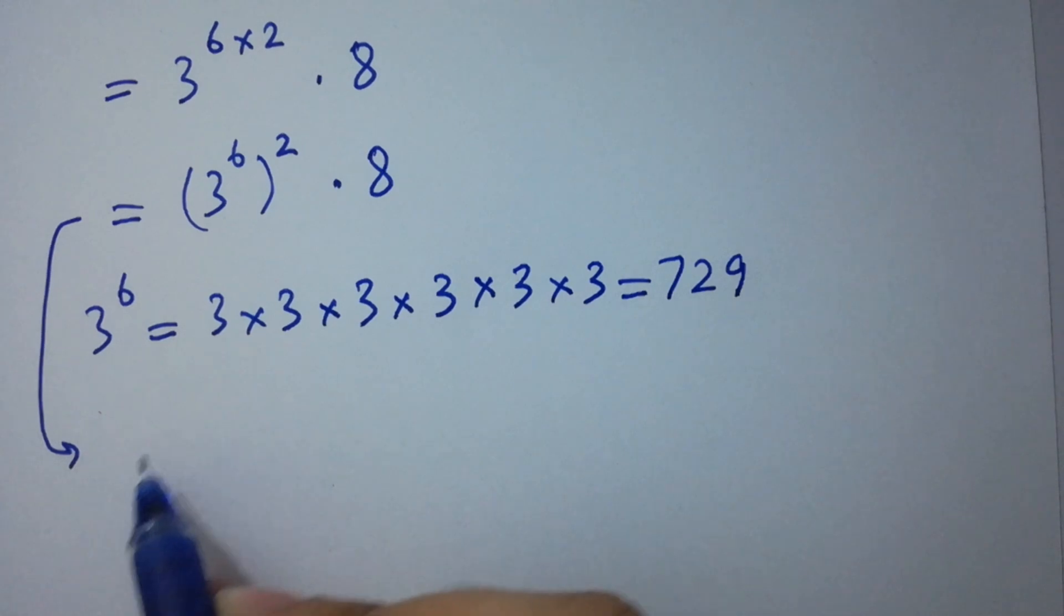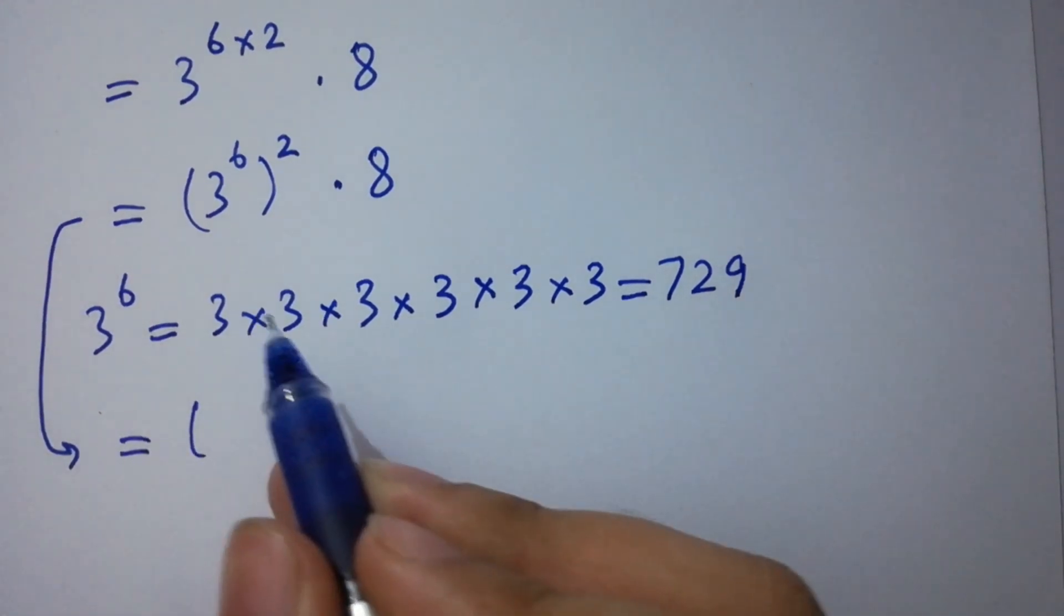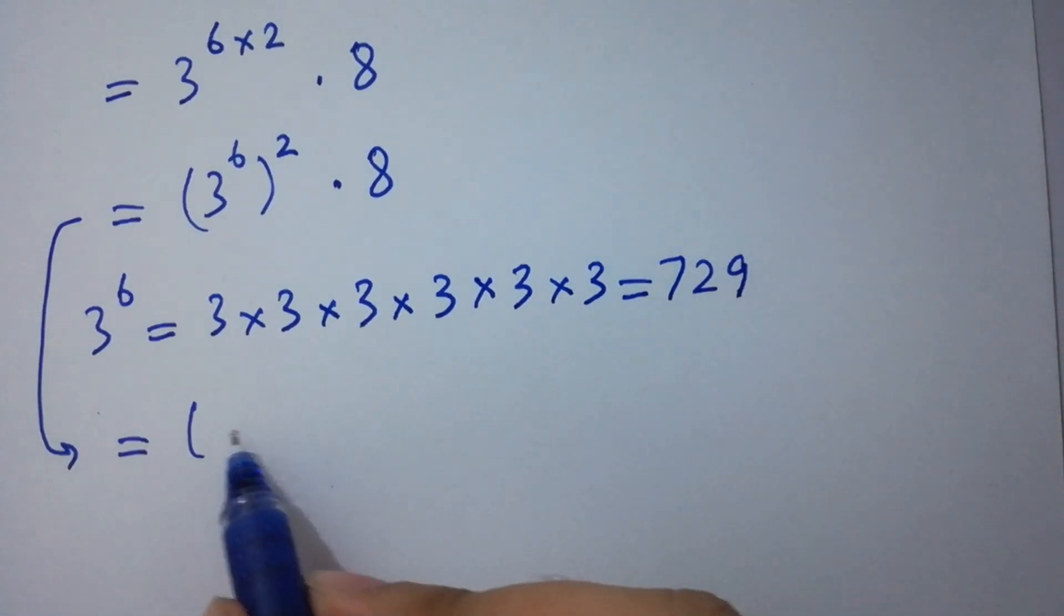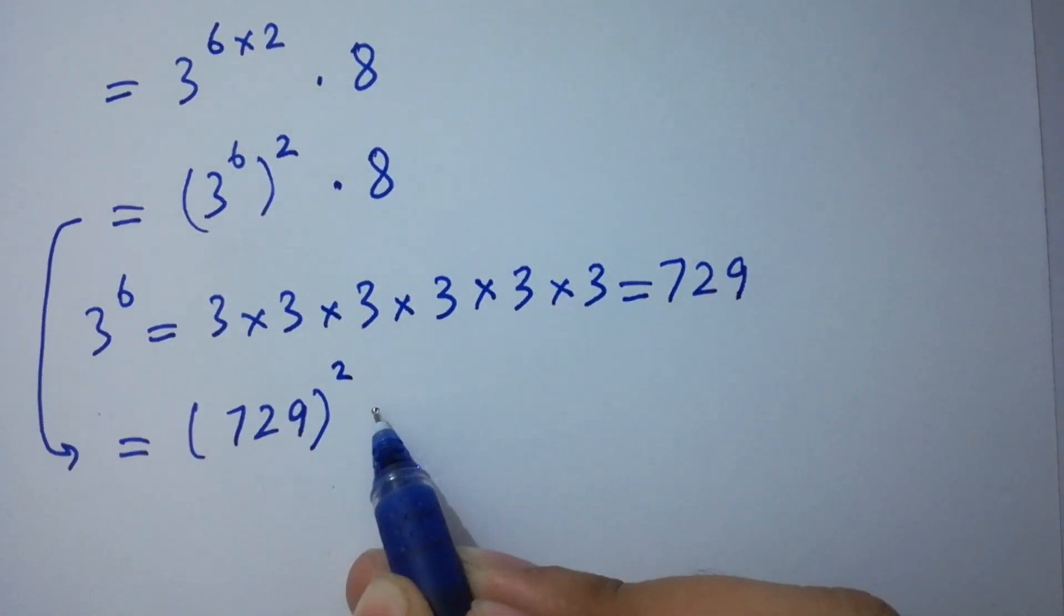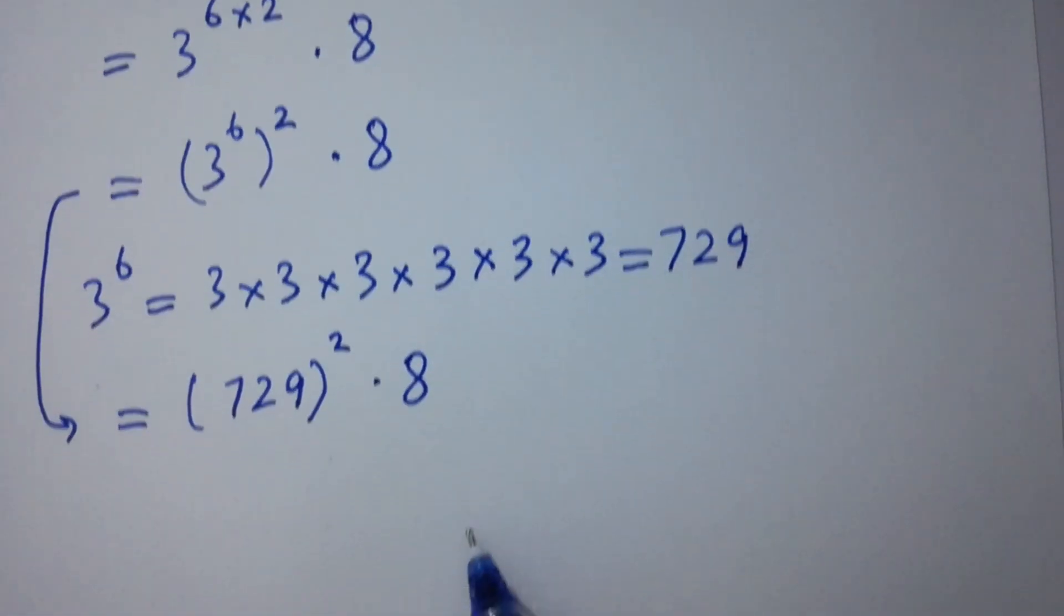So it will be 3 to the power 6, which is 729, to the whole power 2 times 8.